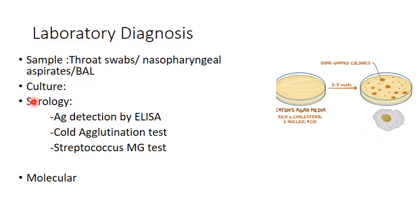This colony morphology is often described as a fried egg appearance. Serology is available for Mycoplasma. Antigen detection can be done by ELISA, and there are two non-specific tests for antibody detection: the cold agglutination test and the Streptococcus MG test, which work on the principle of cross-reactivity. Molecular methods available include PCR.